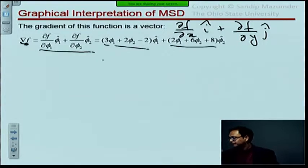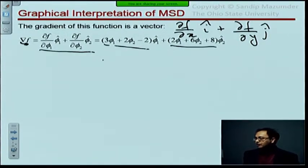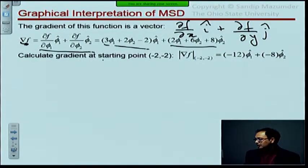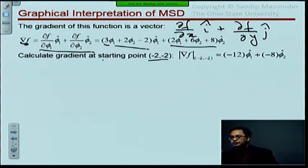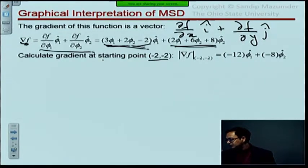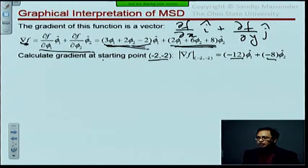Now what we do is we take our initial starting guess minus 2, minus 2 and we plug in those values in here and here and here, and so this first quantity comes out to be minus 12, the second quantity comes out to be minus 8. So our initial gradient vector at minus 2, minus 2 is minus 12 i plus minus 8 j.